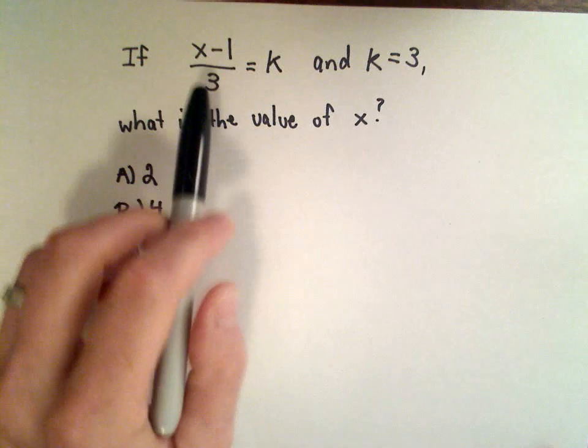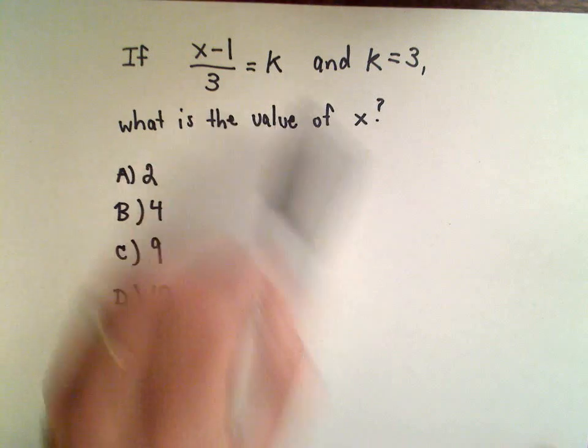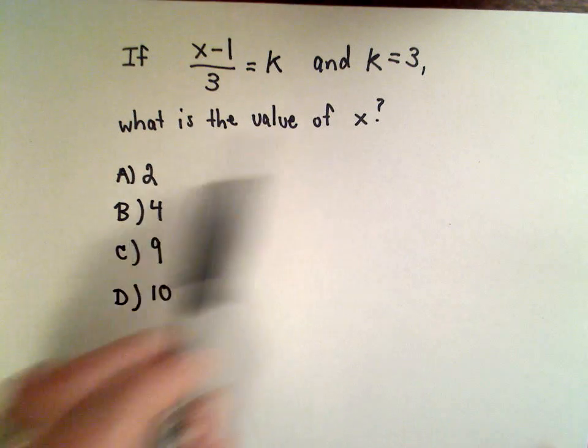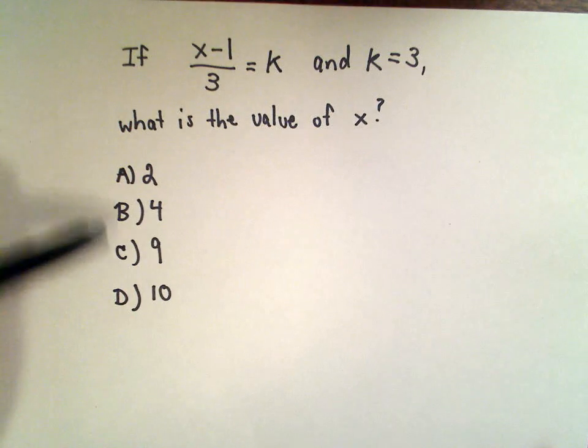It says if the quantity (x - 1) divided by 3 equals k and k equals 3, we want to know what's the value of x. Is it 2, 4, 9, or 10?